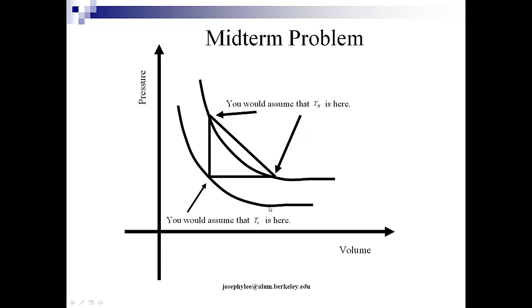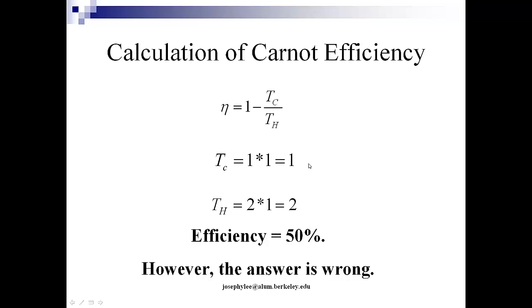And we assume that TC, although it doesn't really matter which PV you pick, but the reason why you will pick this PV point is that it's the easiest PV value you can think of along this isothermal path where you can get the midterm problem answered correctly and quickly. So, the TC will be set at 1 m³ and the pressure will be 1 atm. So, TC will be 1 and TH will be 2 and efficiency is 50%.